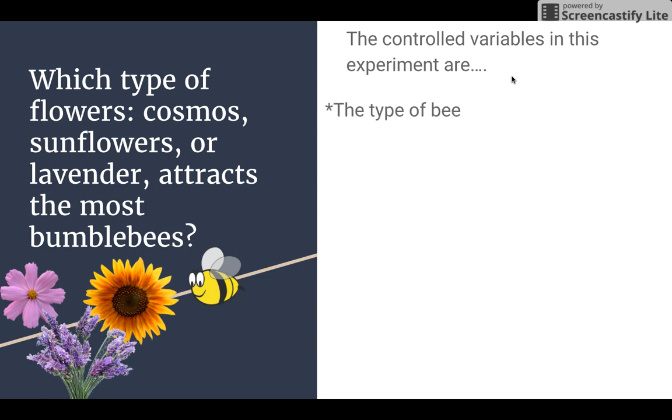Some examples of control variables in this experiment, well, are the type of bee. Bumblebees are certainly not the only type of bee out there. In fact, there's more than one type of bumblebee, but it would be really, really hard to tell which one's which. So you just go with the type of bee, and you just count number of bumblebees.